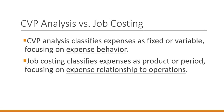Comparing fixed and variable costs in this lecture to product and period costs from the last lecture: in CVP analysis we're looking at expense behavior — whether expenses are fixed or variable — referring to the behavior of the expenses. In our product and period cost analysis, we looked at job costing and the relationship of expenses to operations. Today we're looking at expense behavior again.